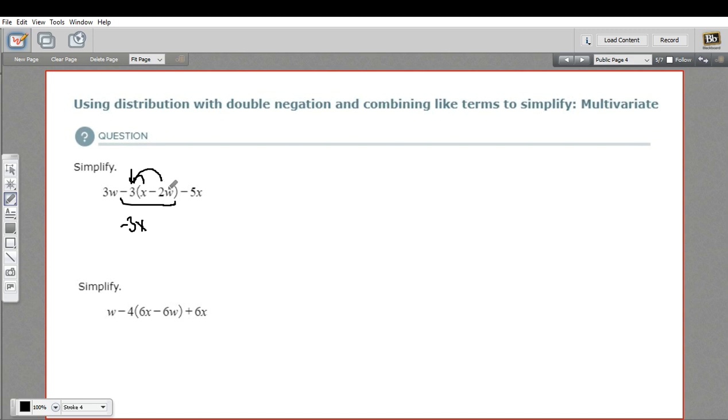The negative 3 times negative 2w is a little bit different because the number part multiplies, and we have a negative times a negative. A negative times a negative is a positive. 3 times 2 is 6.